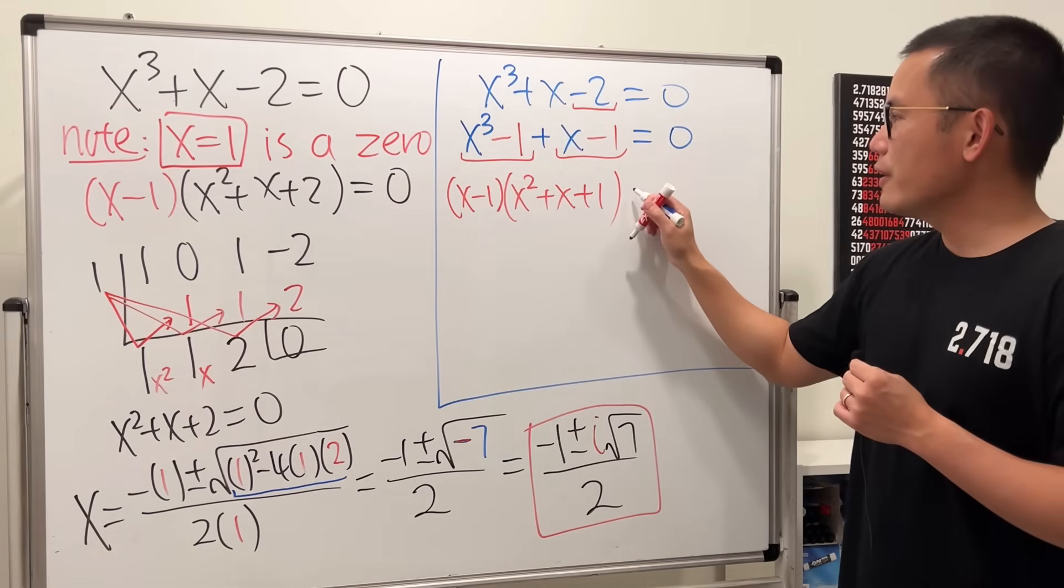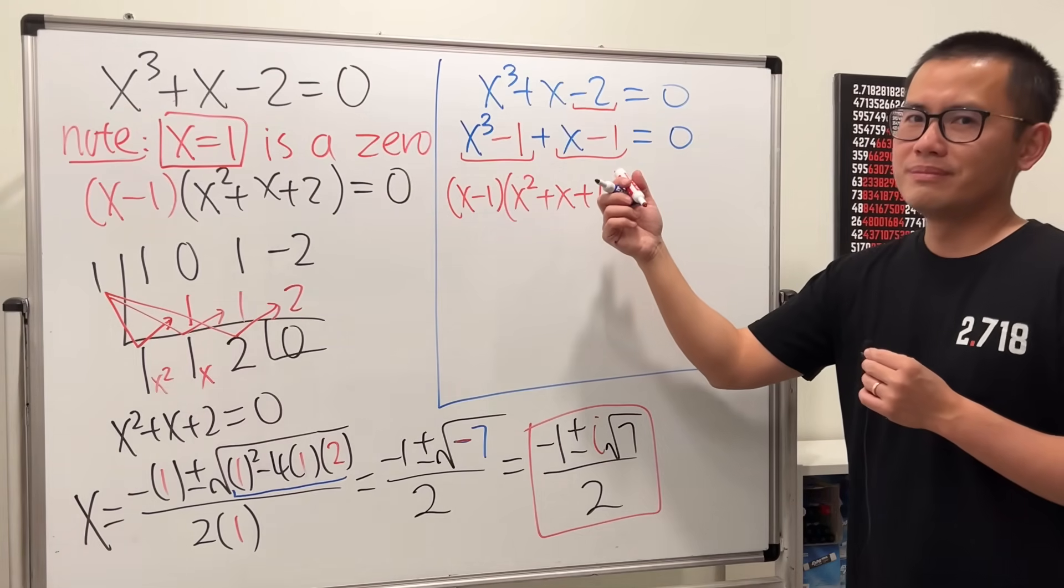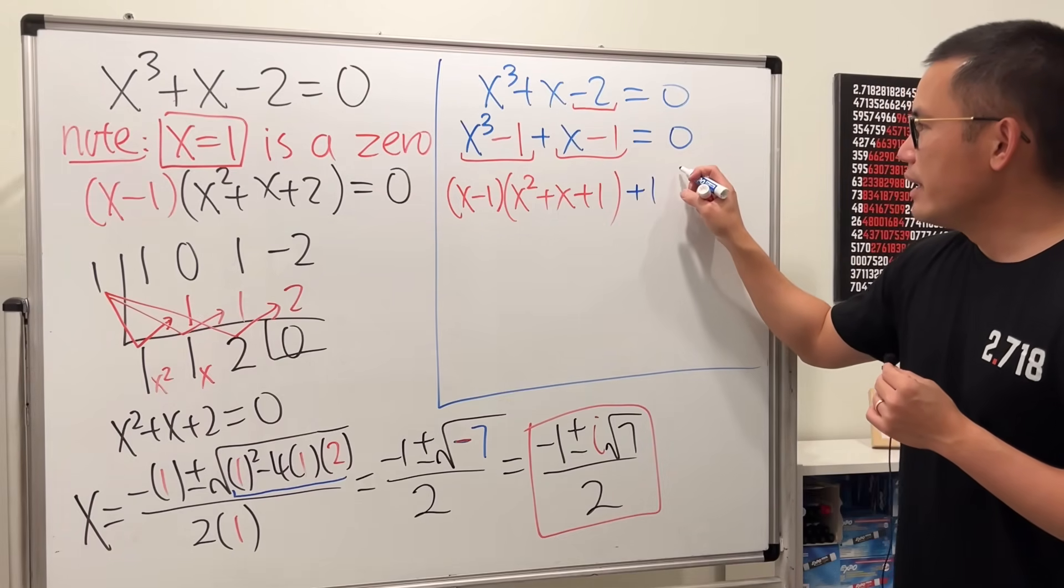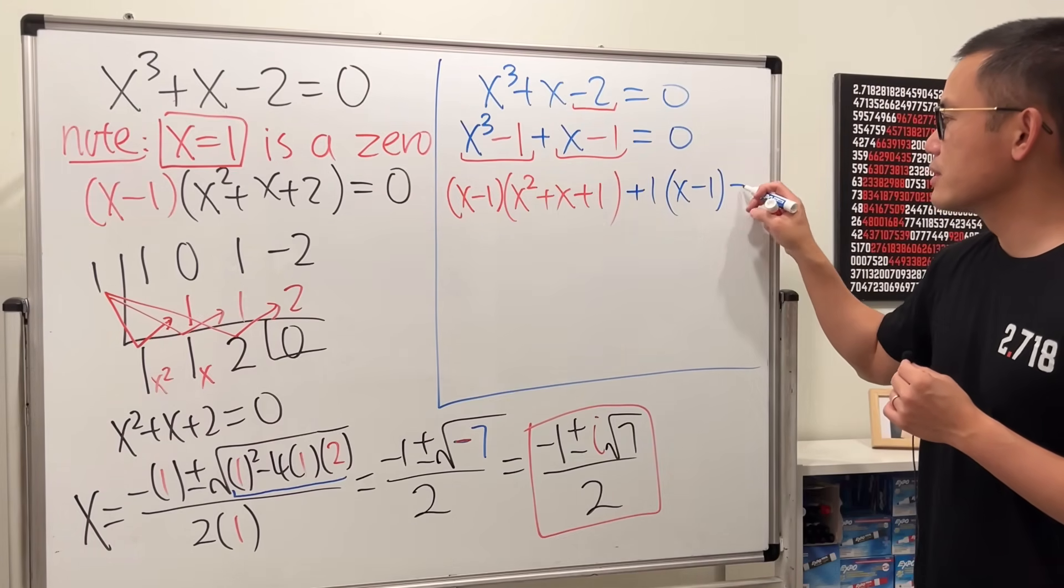Okay, and then right here we can factor out technically a 1, so I'm going to put on plus 1 and then put on parentheses x minus 1, like so.